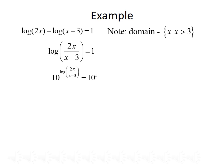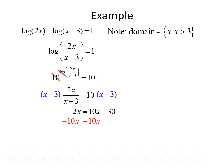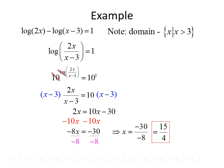To solve for x we need to get rid of the logarithm. Since log has a base of 10, we use an exponential with base 10 on both sides. So 10 raised to the log of (2x divided by x minus 3) equals 10 to the 1. The exponential base 10 and log base 10 cancel, leaving 2x divided by (x minus 3) equals 10. To solve for x, we multiply both sides by (x minus 3), giving 2x equals 10x minus 30. Subtracting 10x from both sides gives negative 8x equals negative 30, and dividing by negative 8 gives x equals 15 over 4. Since 15 over 4 is greater than 3, this is a valid solution.